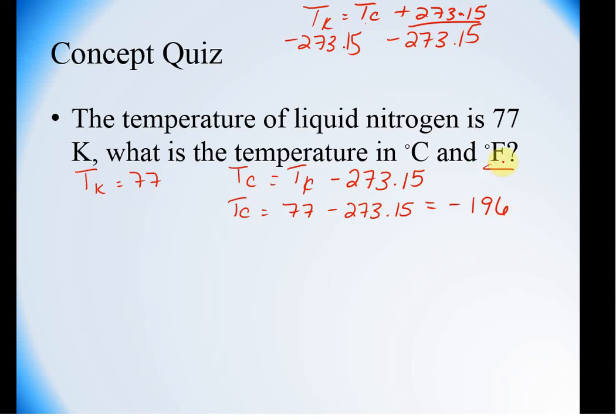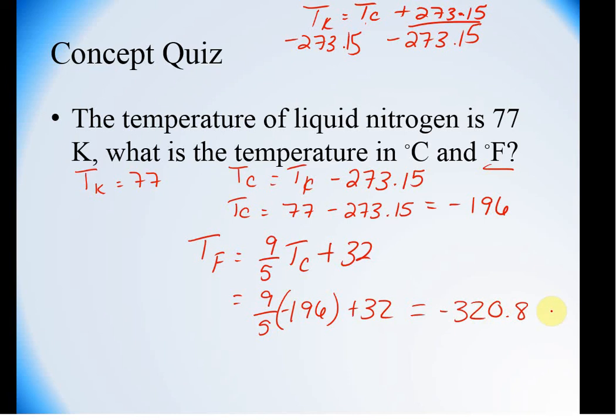To find the temperature in Fahrenheit, temperature in Fahrenheit is equal to 9 fifths TC plus 32. So, it's equal to 9 fifths TC of negative 196 plus 32. And you end up getting something like negative 320.8 degrees Fahrenheit or very, very, very cold.